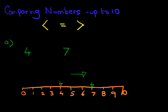So number 4 is smaller. So which symbol do you think we should place in the middle? That's right, it goes this way. Because number 4 is smaller than 7. And don't forget, the arrow has to point towards the smaller number. That was nice and easy, wasn't it?